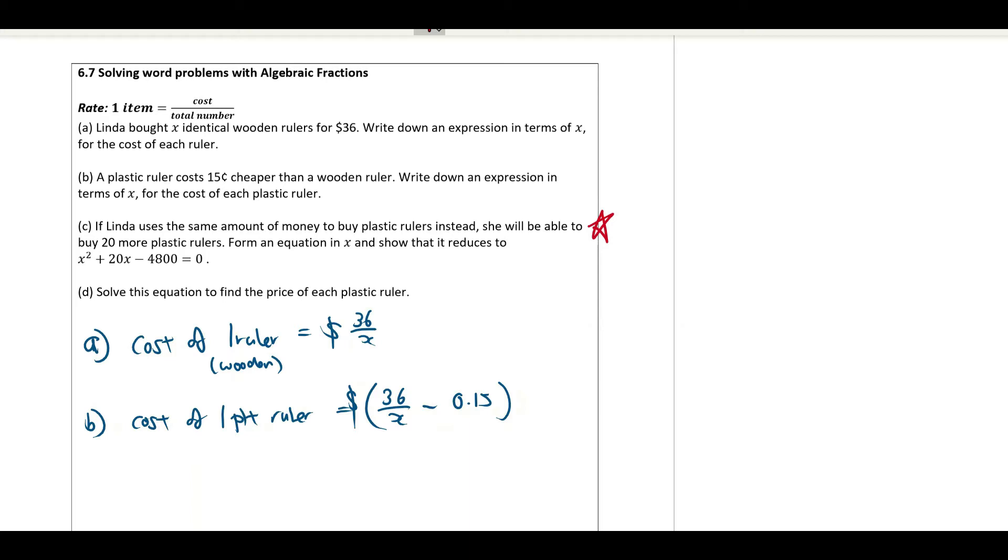So at this point of time, she is only able to buy X rulers. How many rulers can she buy with 36 dollars? X plus 20.